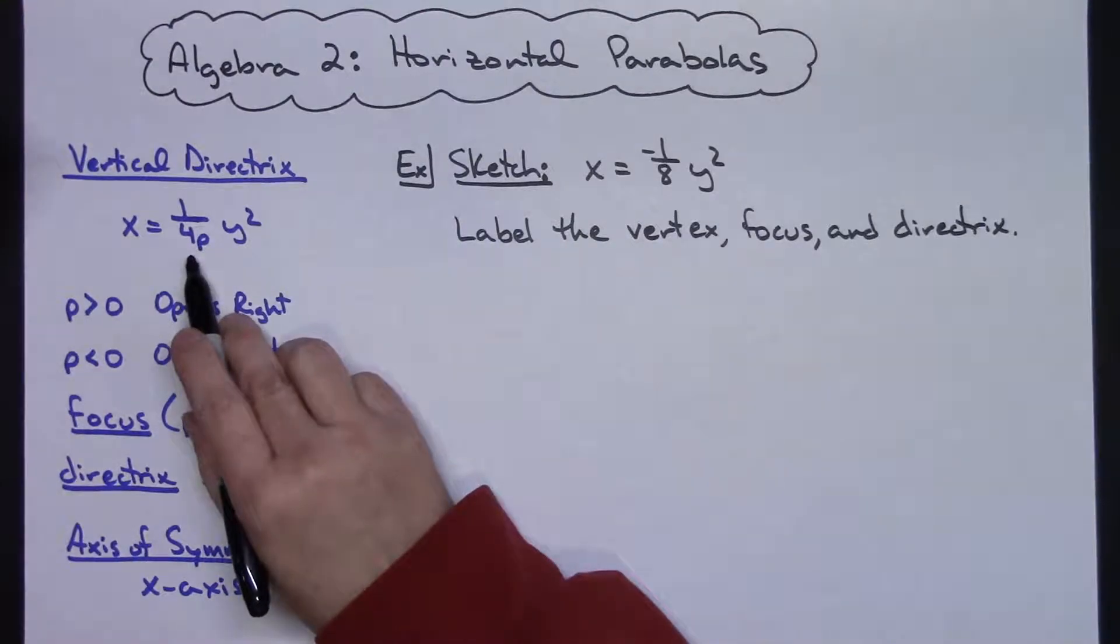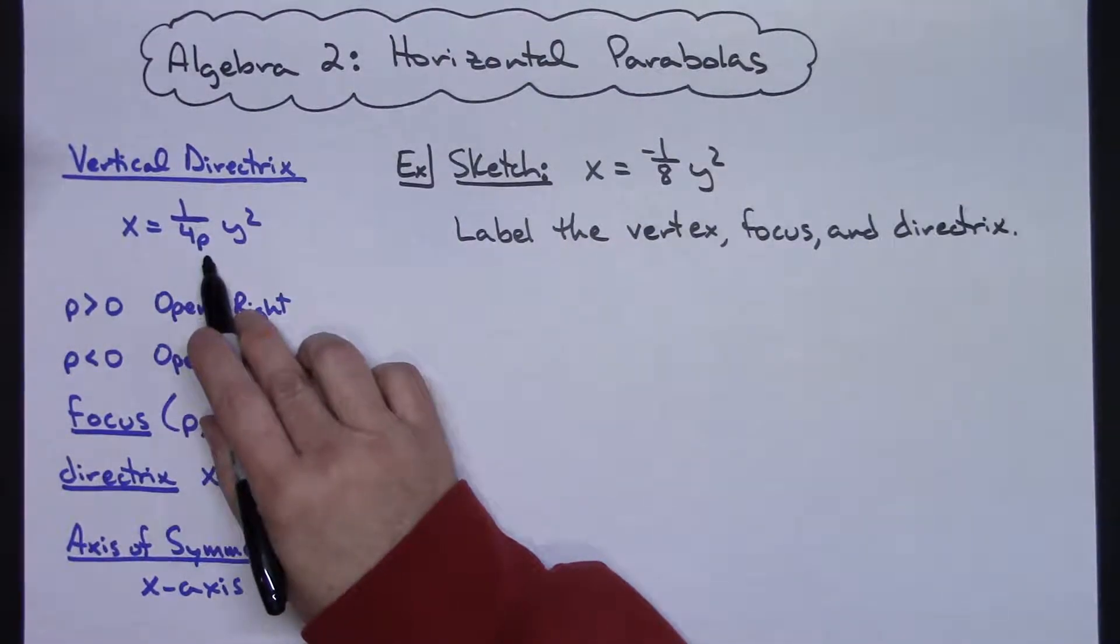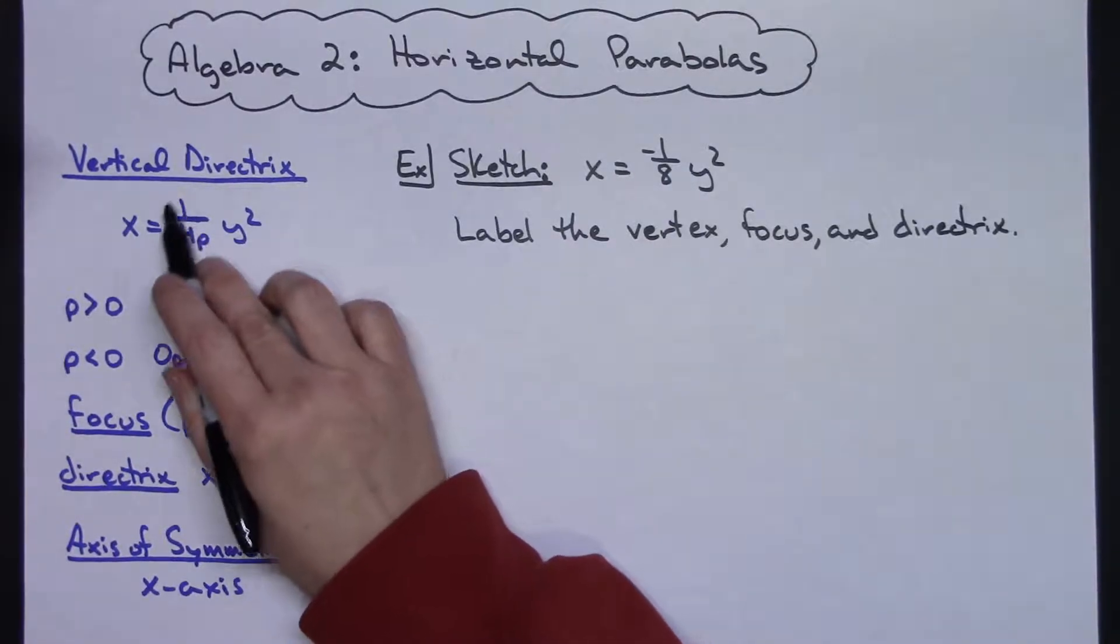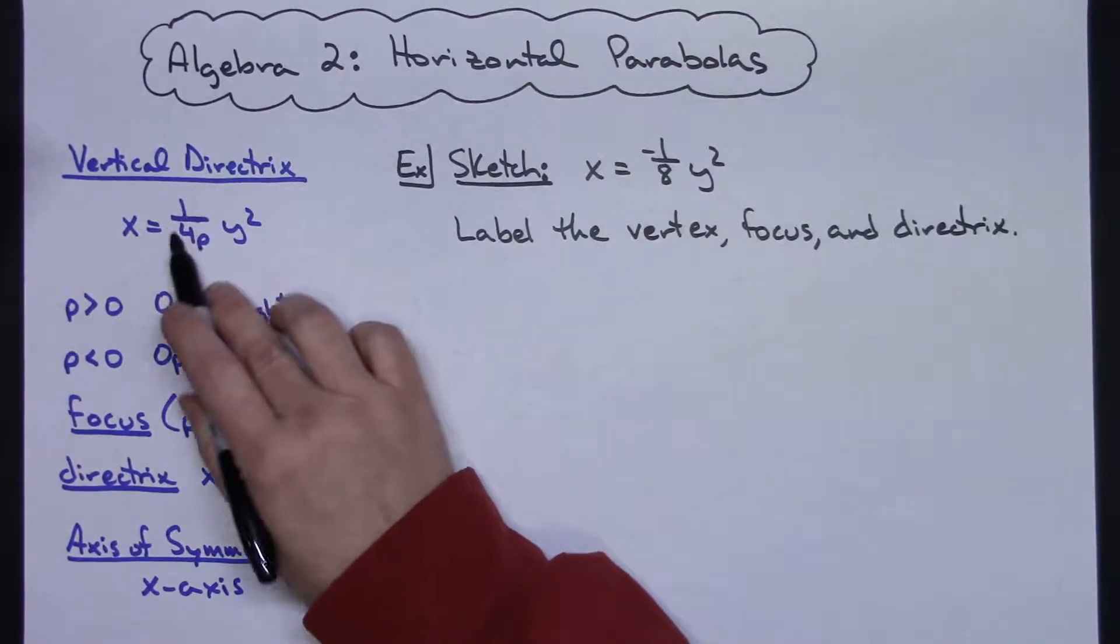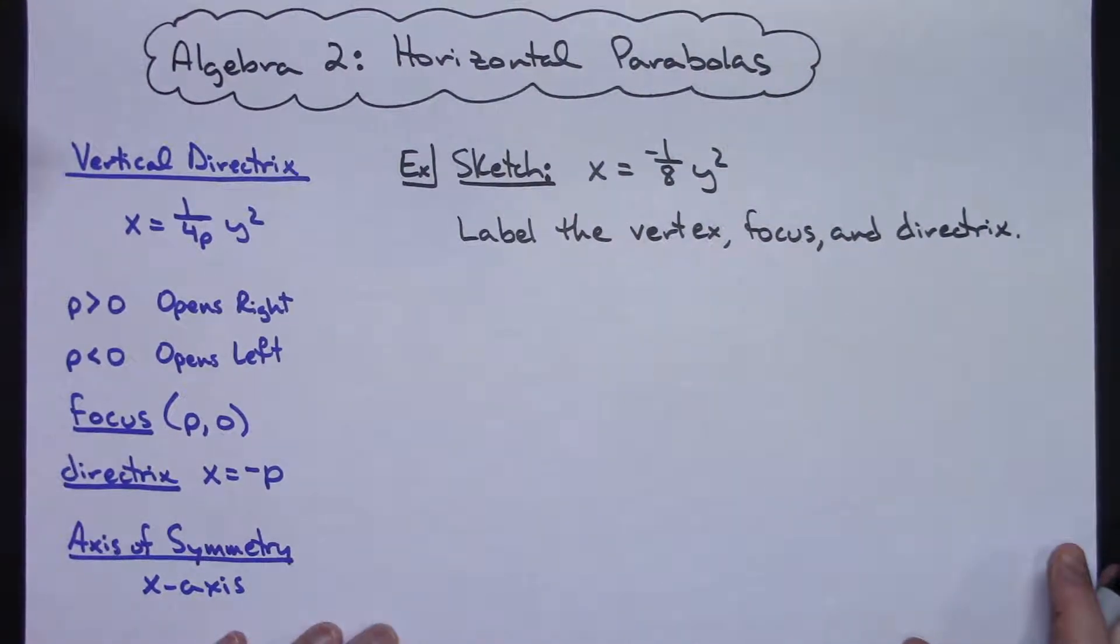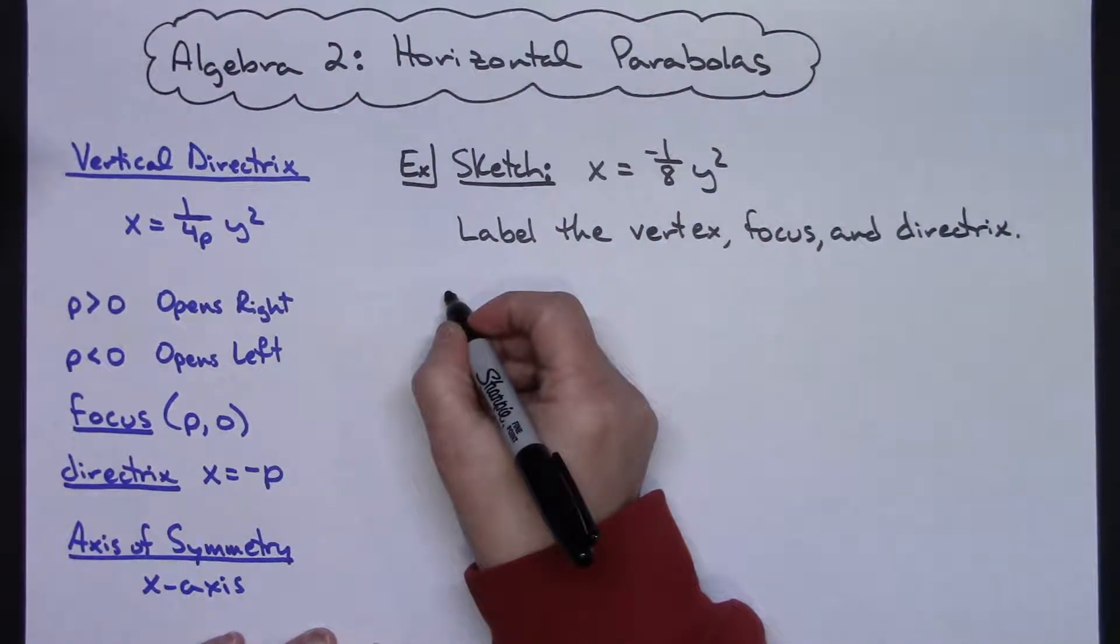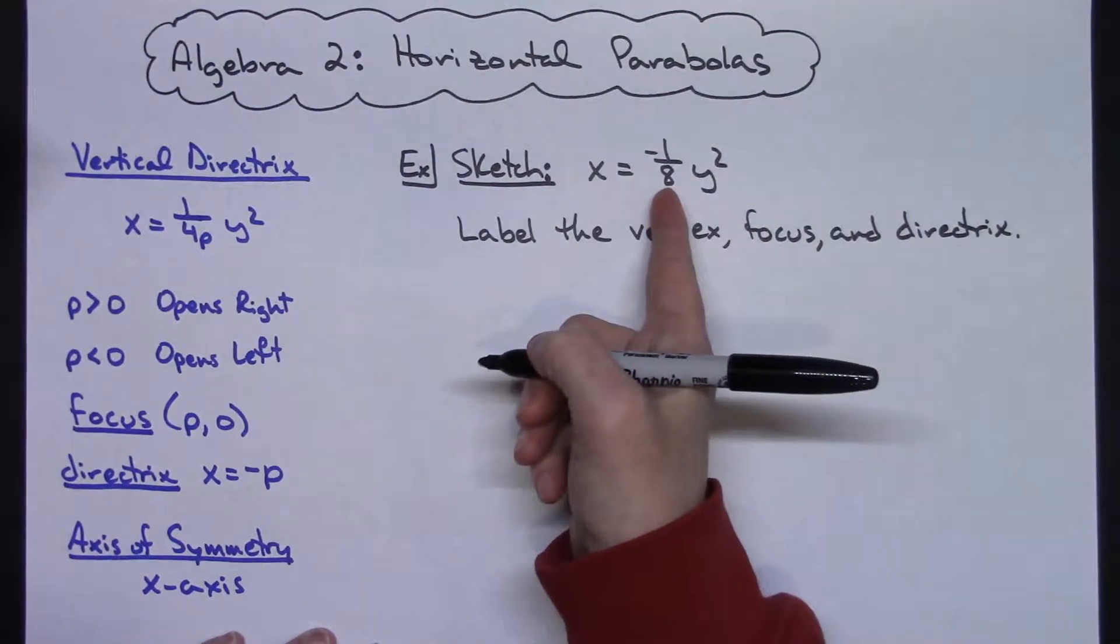So in our formula over here x equals 1 over 4p y squared, this 1 over 4p is equal to the negative 1 eighth. So hopefully if you're trying to identify your p you can real easily just rewrite right there.